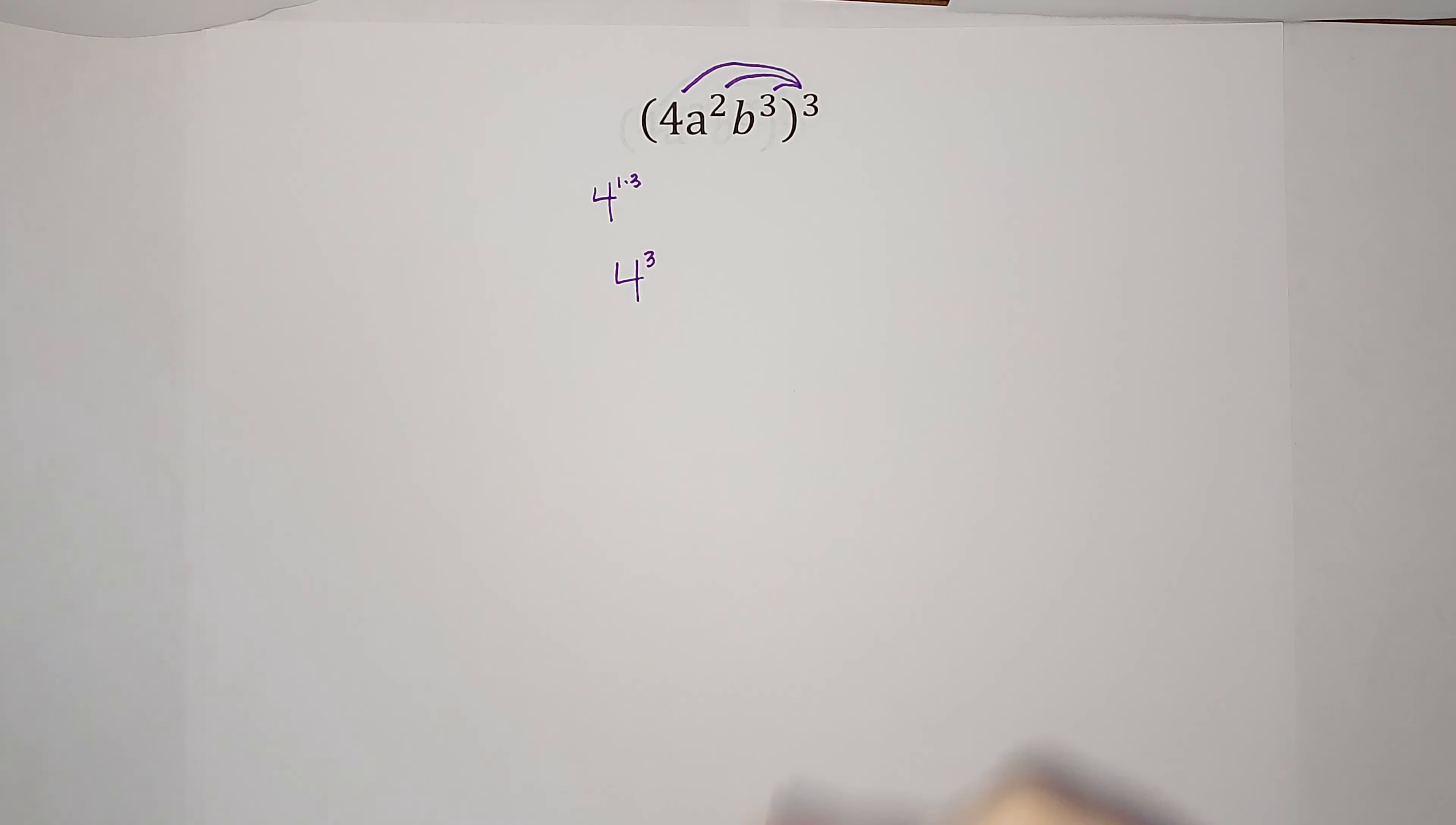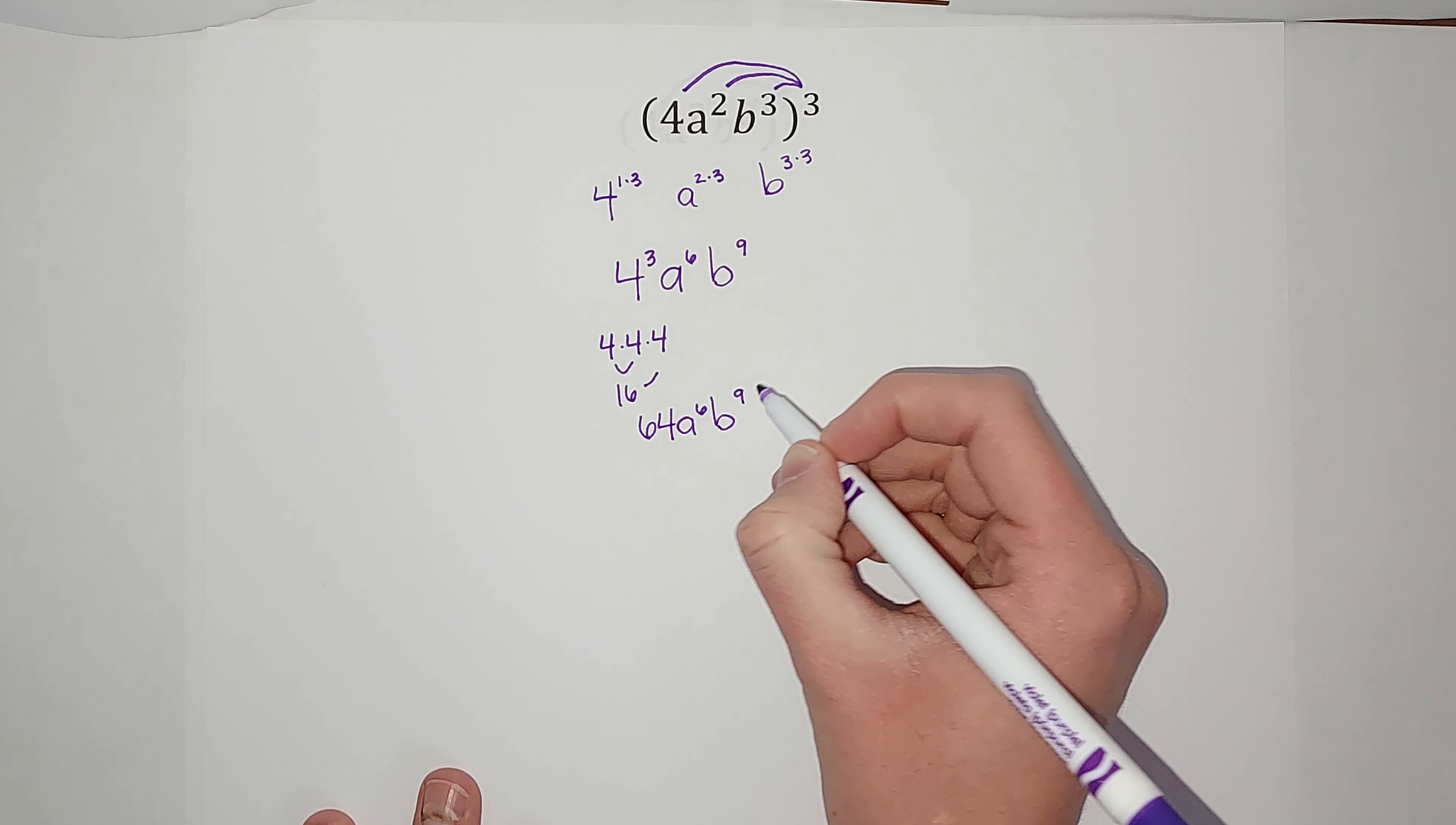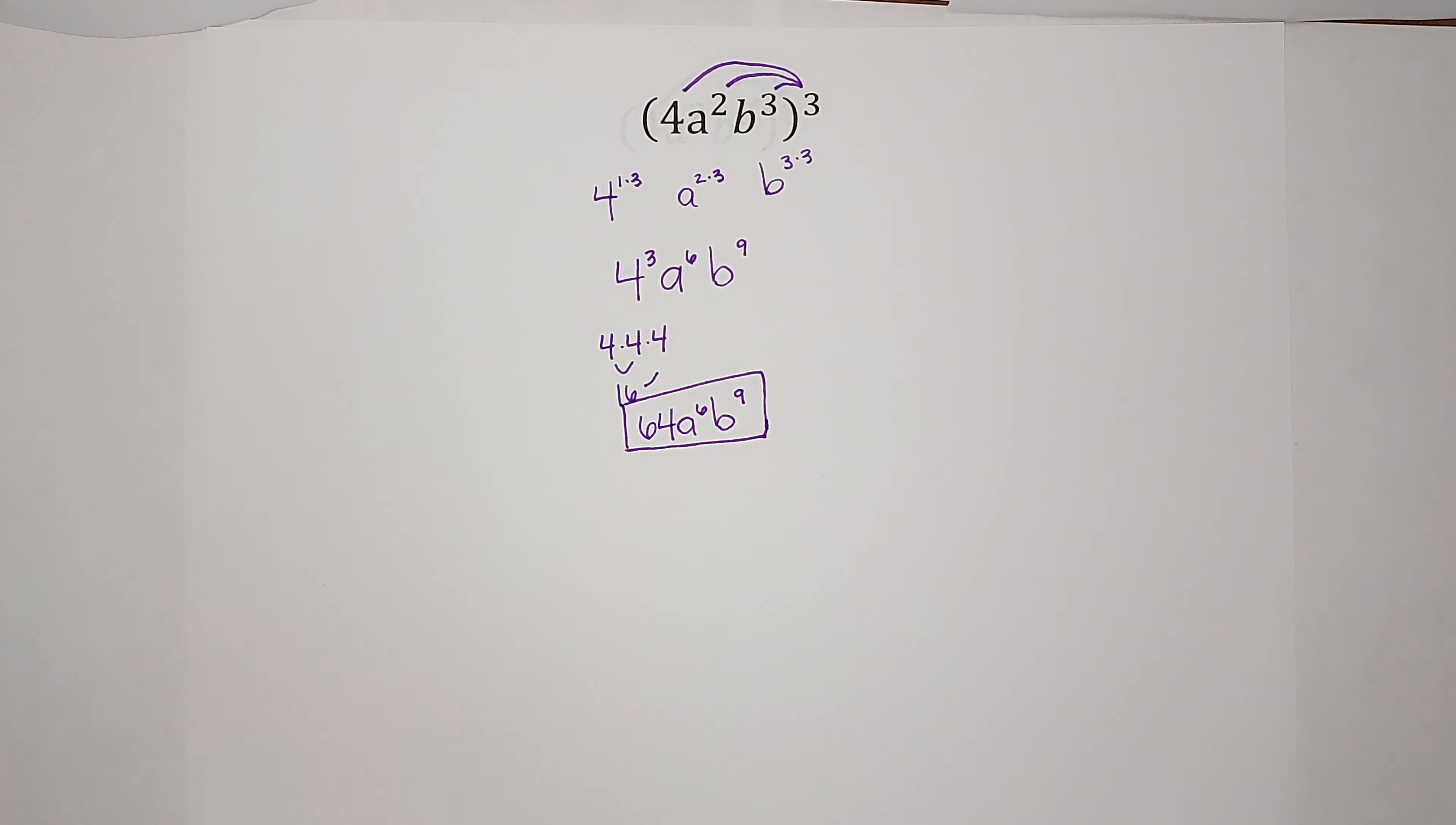16 times four gives me 64, so that's my four cubed. Then a to the sixth, I can't simplify that down anymore. And b to the ninth, I can't simplify down anymore. So that is my answer. Hopefully that made sense.